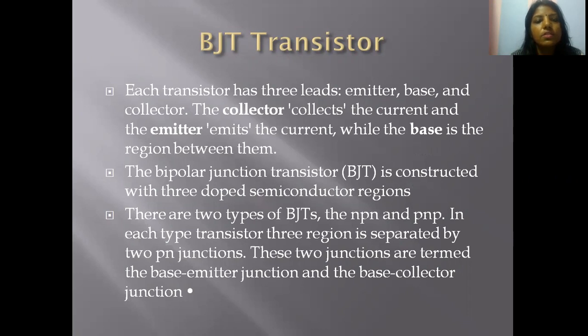Bipolar junction transistors are constructed with three doped semiconductor regions. BJT has two types: NPN and PNP. These three regions are separated by two PN junctions: the base-emitter junction and the base-collector junction.